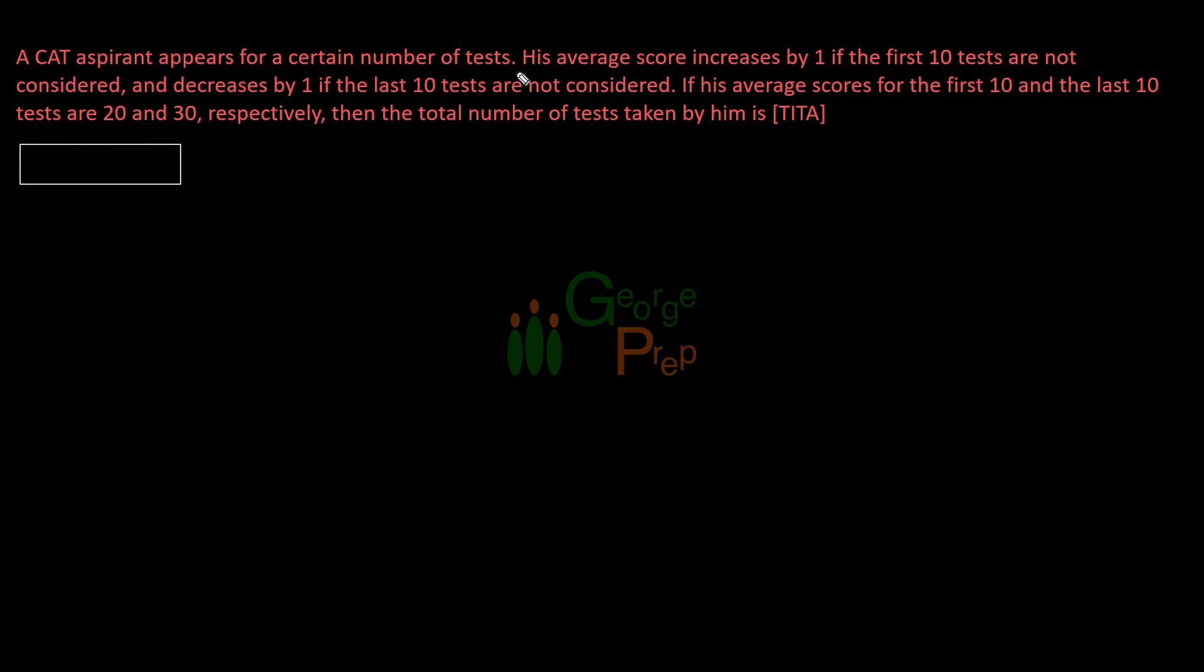A CAT aspirant appears for a certain number of tests. His average score increases by 1 if the first 10 tests are not considered and decreases by 1 if the last 10 tests are not considered. If his average score for the first 10 and last 10 tests are 20 and 30 respectively, then the total number of tests taken by him is?